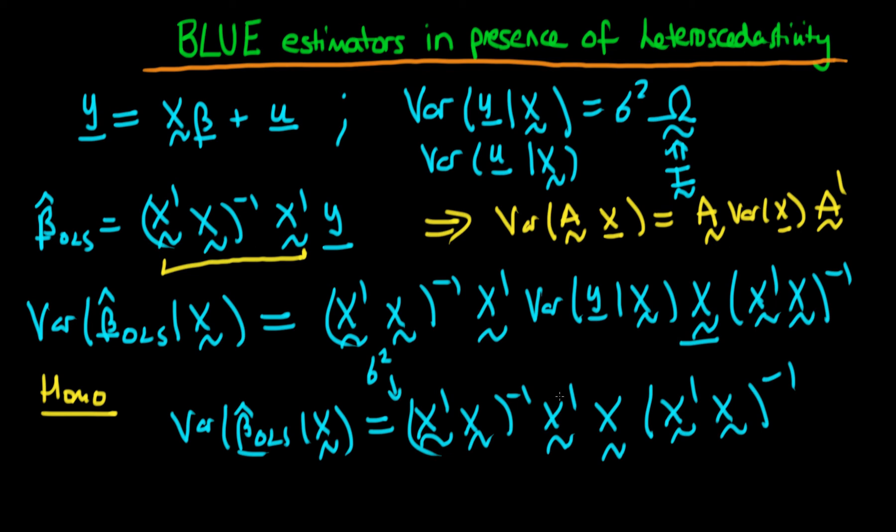And we're going to be left with the variance of beta hat OLS is equal to sigma squared times x prime x to the power minus 1. And notice that this was under the assumption that we have homoscedastic errors.